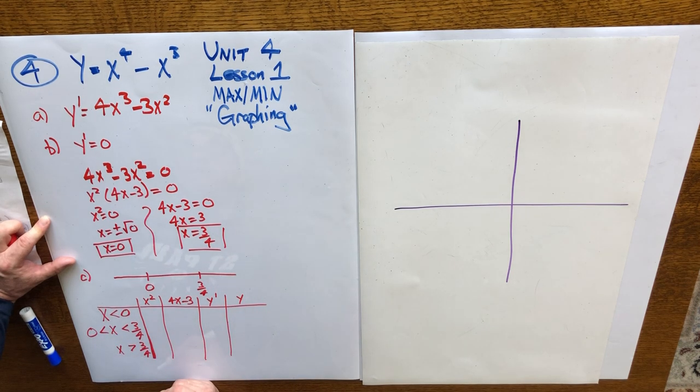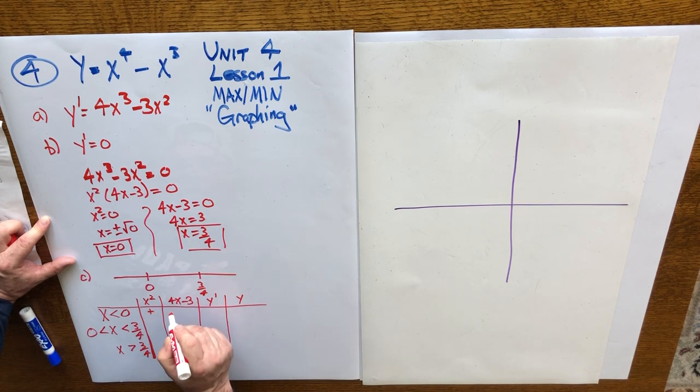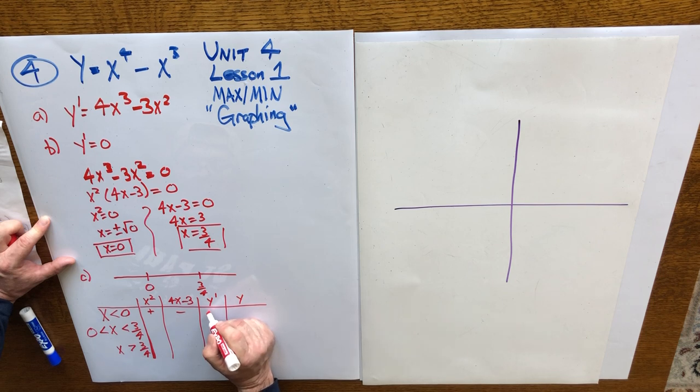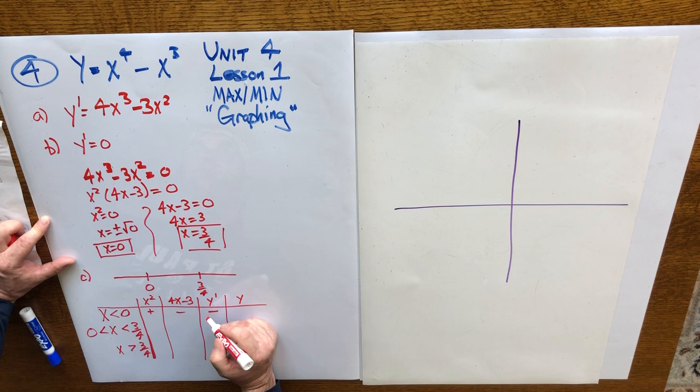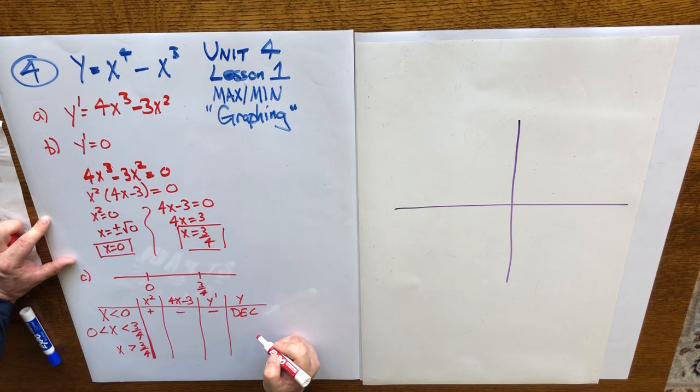Let's take a number less than 0 like negative 1. When you square it, you get a positive value. When you put it into this factor, 4 times negative 1 subtract 3 gives you a negative value. These two factors multiplied together make the whole derivative negative. And if the derivative is negative, it suggests that the slope of the tangent line is negative. The function is decreasing, going down to the right.